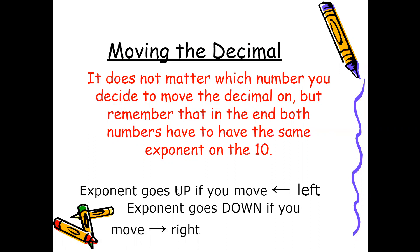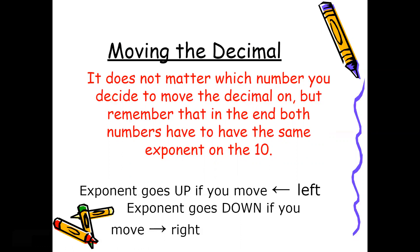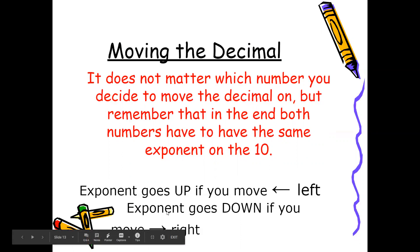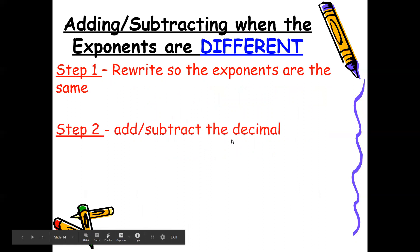Going up means increasing — moving from 10 to the second power to 10 to the third — so you move your decimal to the left. Going down means decreasing — moving from 10 to the third to 10 to the second — so you must move your decimal to the right. Keep this rule in mind as you change your exponents.